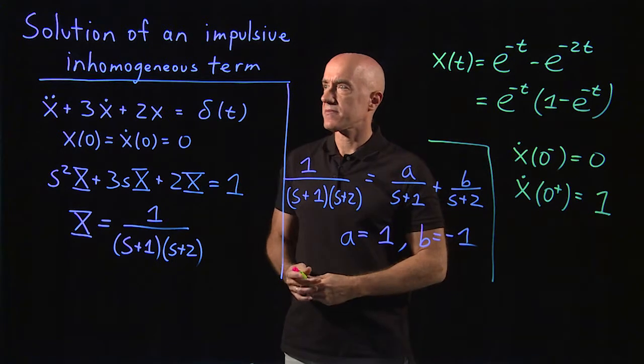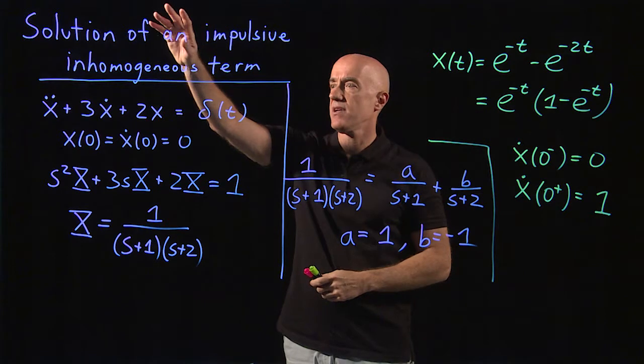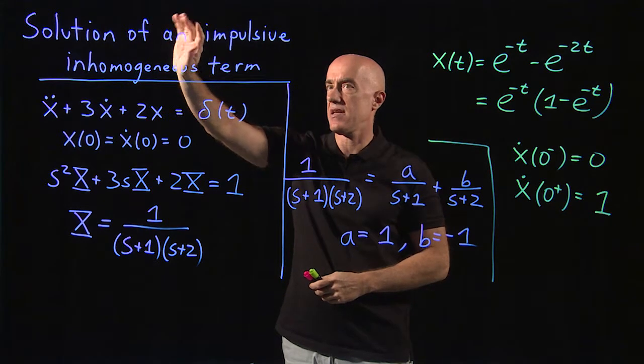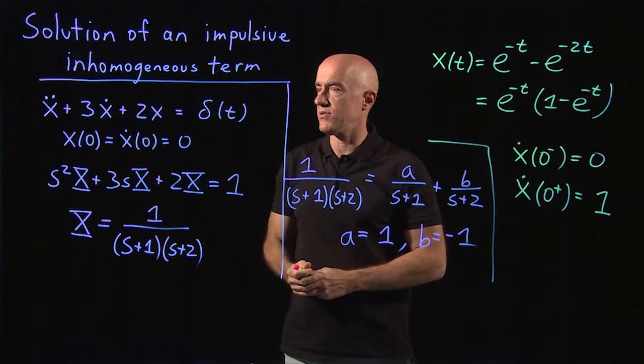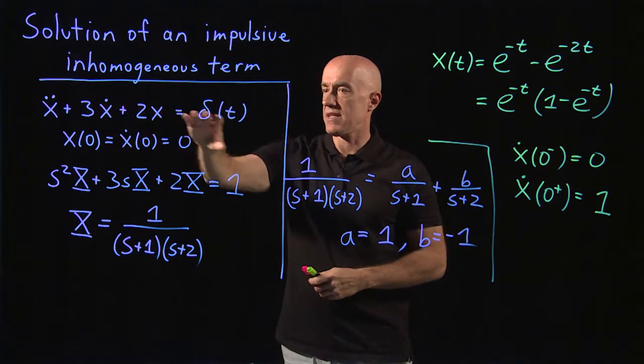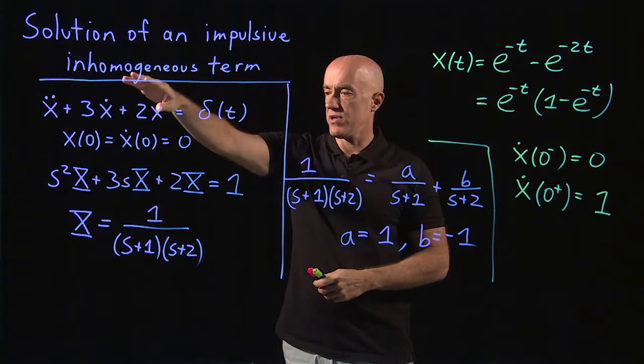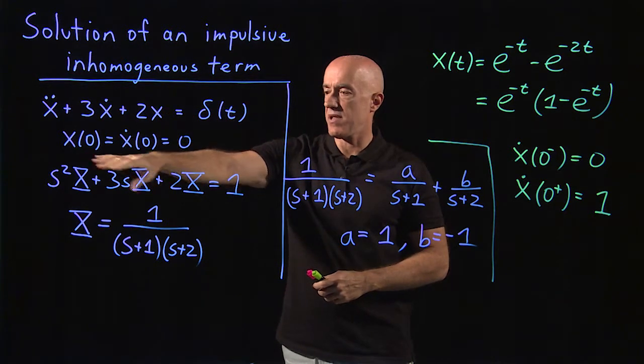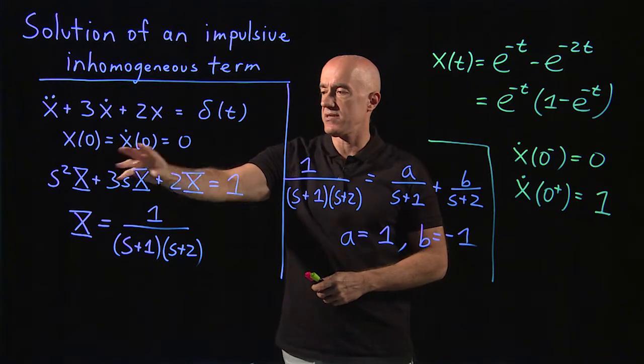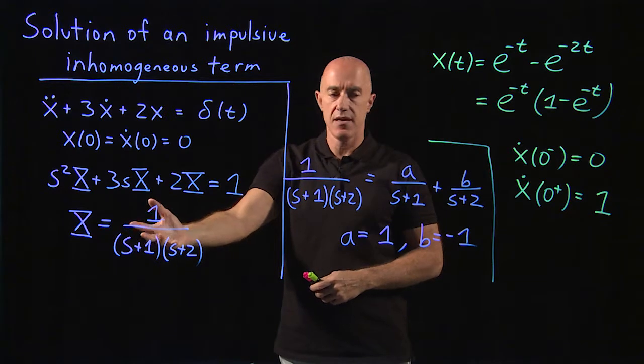So let me summarize. We're trying to solve an equation with an impulsive, inhomogeneous term that's modeled by a direct delta function. We use the table to take the Laplace transform of the equation and solve for x of s.